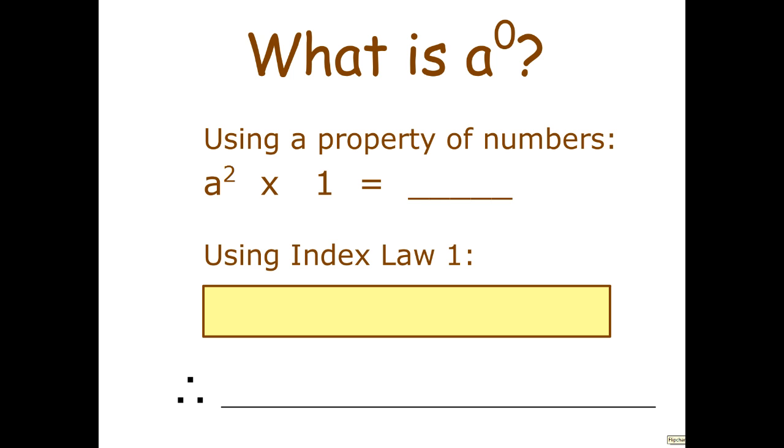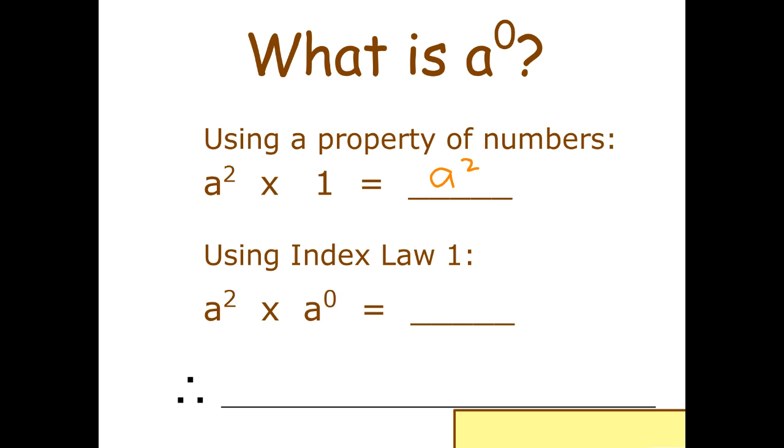So we can figure out what a to the zero actually means. So let me drag that out of the way. So I'm going to actually interpret this two different ways. First off using a property of numbers, a squared multiplied by 1 equals anything multiplied by 1 equals itself. So 6 by 1 is 6, 12 by 1 is 12. So a squared by 1 is a squared. Now we can use index law 1 to also simplify that. So the index law says if you multiply powers with the same base you add indices. So a squared times a to the zero is just a to the 2 plus 0 which is 2. Okay now let's have a look at all of this.